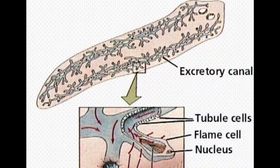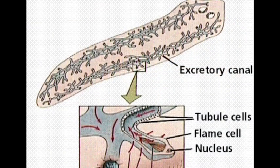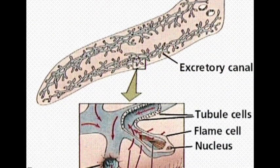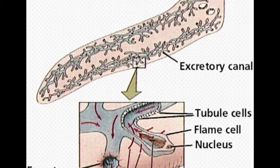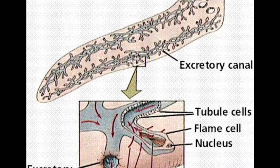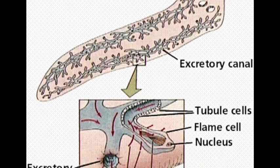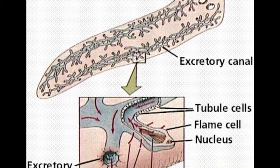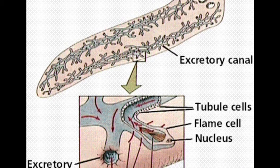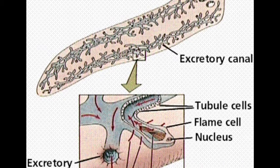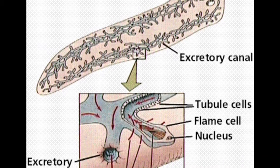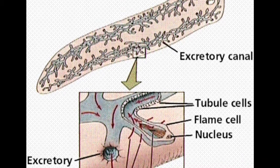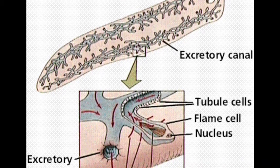The flatworm excretory system uses nephridium as their excretory organ. At the end of each blind tubule of the nephridium is a ciliated flame cell. As fluid passes down the tubule, solutes are reabsorbed and returned to the body fluids.